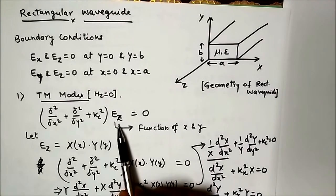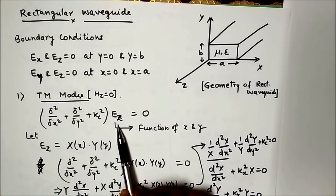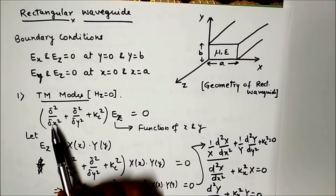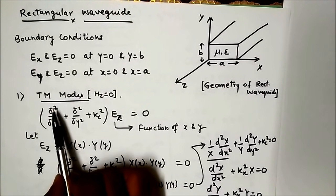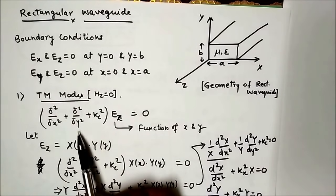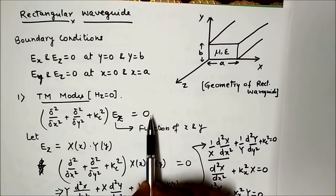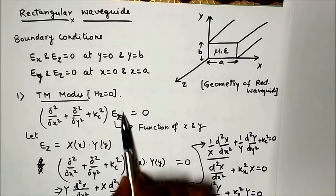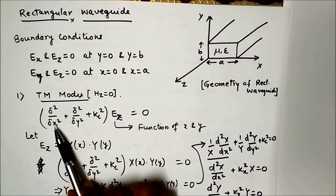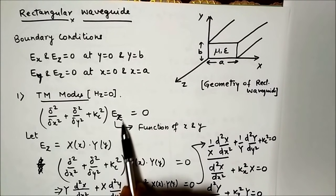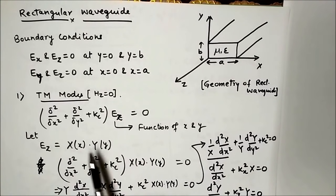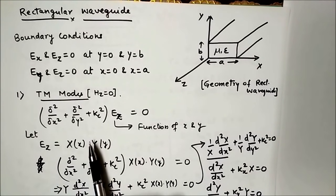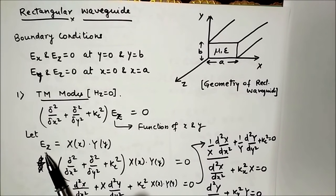We write the Helmholtz equation for Ez as discussed in the general solution of TM mode. The differential equation in x and y functions plus Kc² Ez equals zero. The solution of Ez contains separate x and y functions, so we use the separation of variables method to solve for Ez.